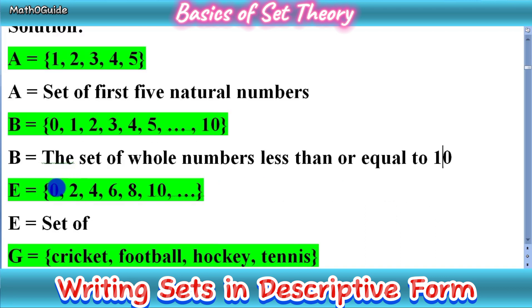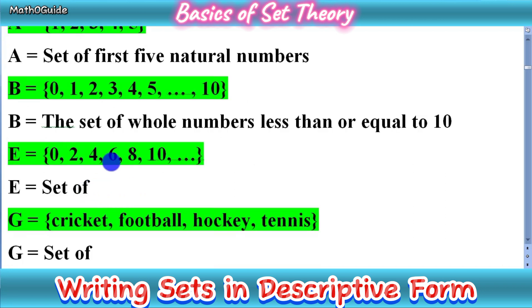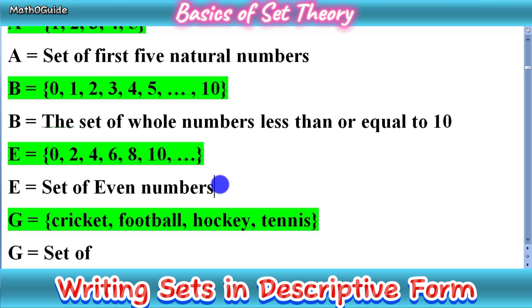Now we have set E = {0, 2, 4, 6, 8, ...}. These are even numbers — when we divide them by 2 we get remainder 0. This is a complete set of even numbers with no limit, so we simply write: set of even numbers. If we had a finite range, we would specify that range.